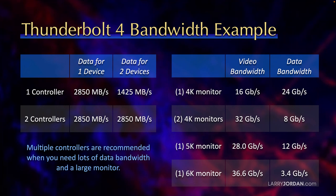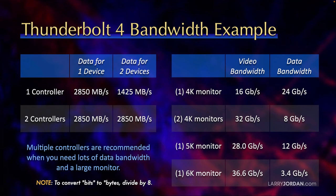That gets me to the right-hand table. Video data to the monitor always has priority over data traffic. If I plug in one 4K monitor, it requires 16 gigabits per second. Because Thunderbolt 3 or Thunderbolt 4 have a 40 gigabit limit, 40 minus 16 leaves roughly 24 gigabits per second for data.